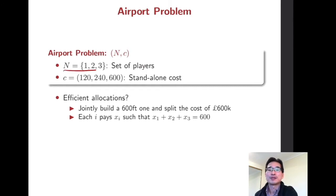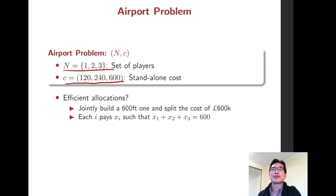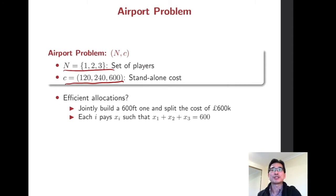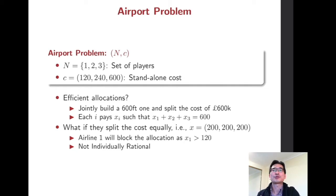We have three players, and each player requires some cost if they build separately — that's the stand-alone cost. The efficient solution is, of course, to jointly build a 600-foot runway and split the cost of 600. Our allocation assigns some payment to each airline company, so the sum of payments is 600. That's an efficient allocation.